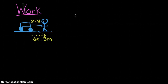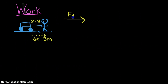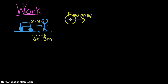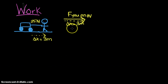If the question asks for the work that you do on the wagon, I'm most interested in the force vector of you on the wagon. Putting the force vector and displacement vector tail to tail, you'll notice they line up alongside each other — the angle between them is zero degrees.